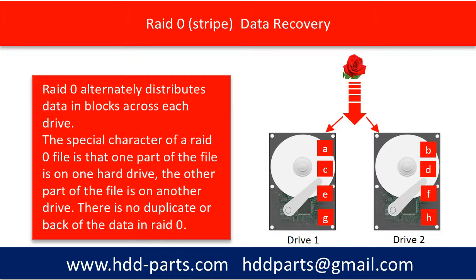So the special character of a RAID 0 file is that one part of the file is on one hard drive, and the other part of the file is on another hard drive. There is no duplicate or backup of the data in RAID 0.